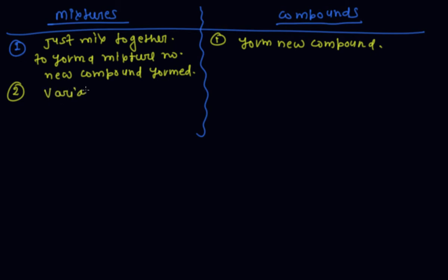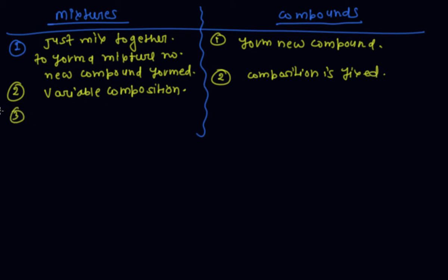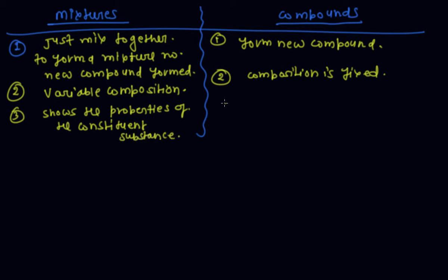The second difference is that a mixture has variable composition, whereas in a compound the composition is fixed. The third difference is that a mixture retains the properties of its constituent substances, whereas in a compound the properties are totally different from the constituent elements.